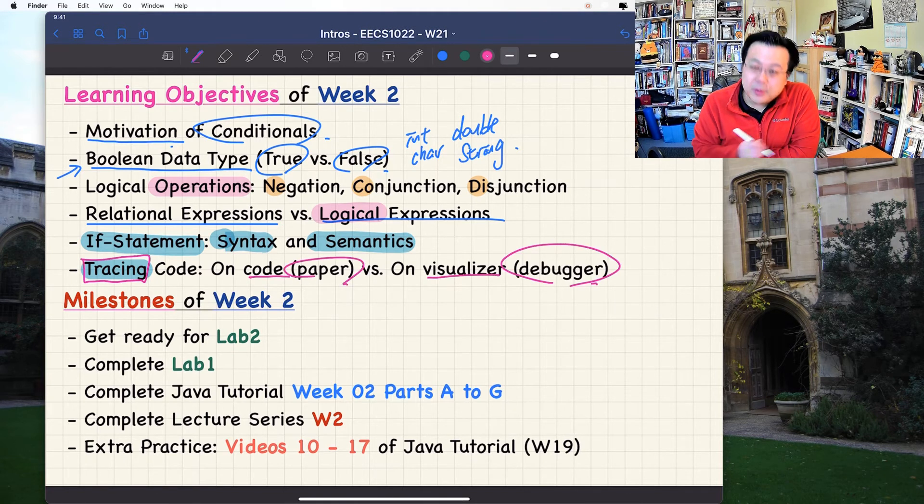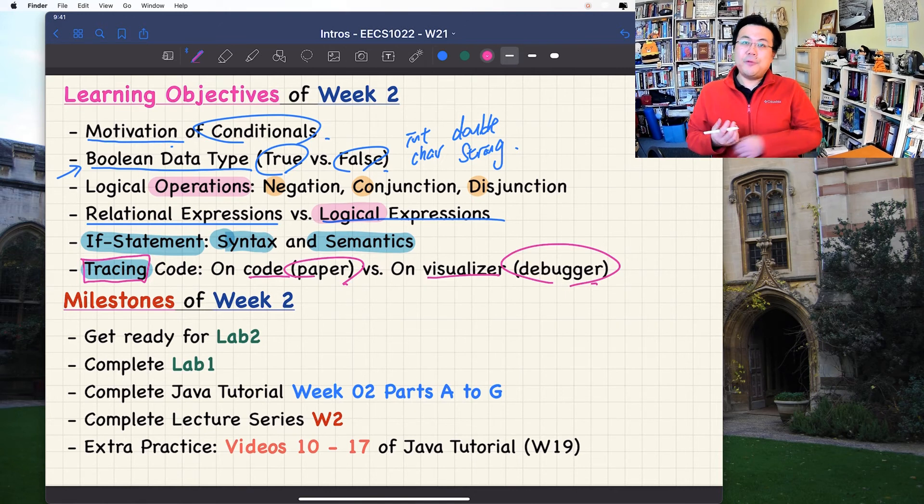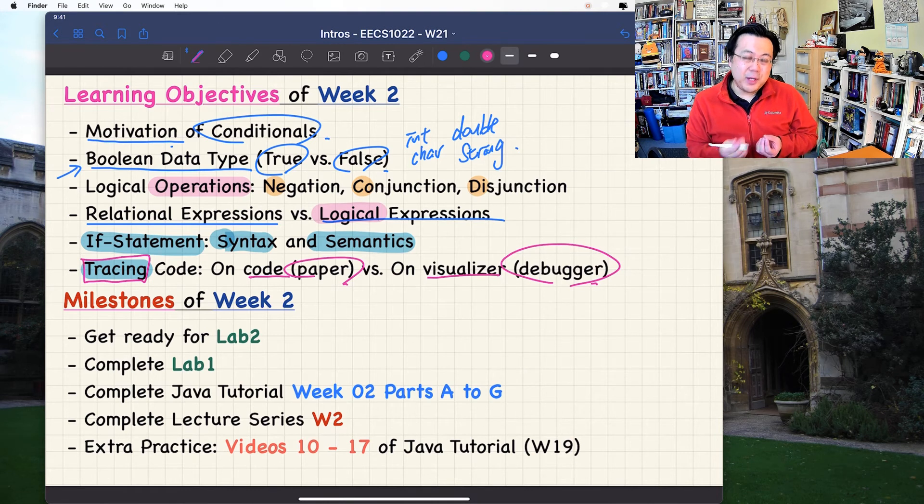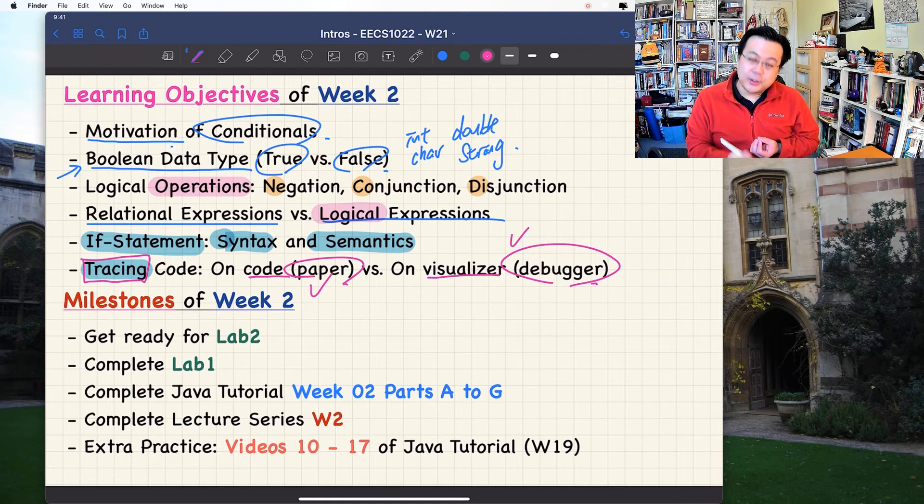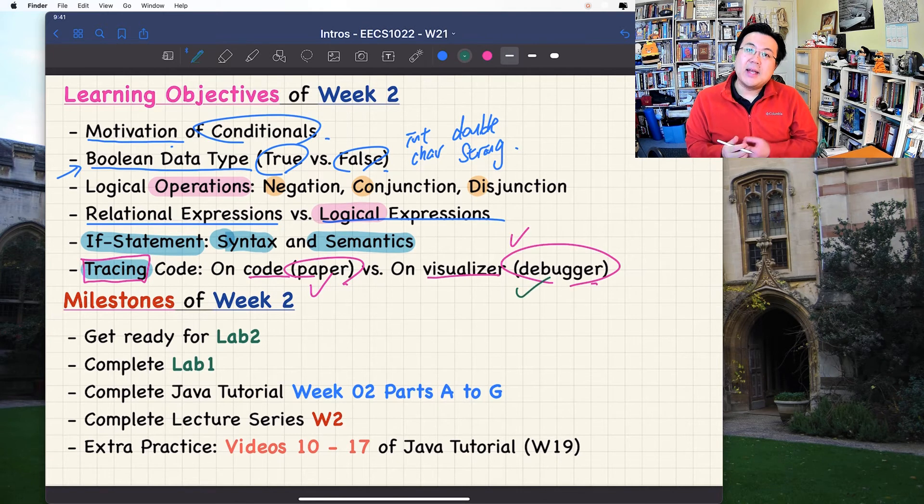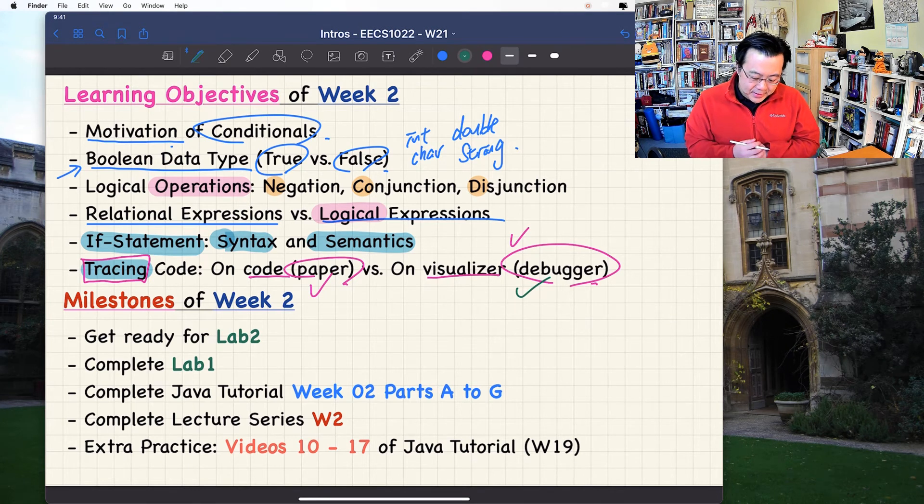I would say both are important because, for example, if you're writing an exam or written test, you may not have enough time to launch the debugger. In that case, knowing how to trace directly on the code or on paper will be crucial. On the other hand, if you're taking a programming test, you're on Eclipse anyway. In that case, if you run into trouble with your code, debugger will be your best friend.